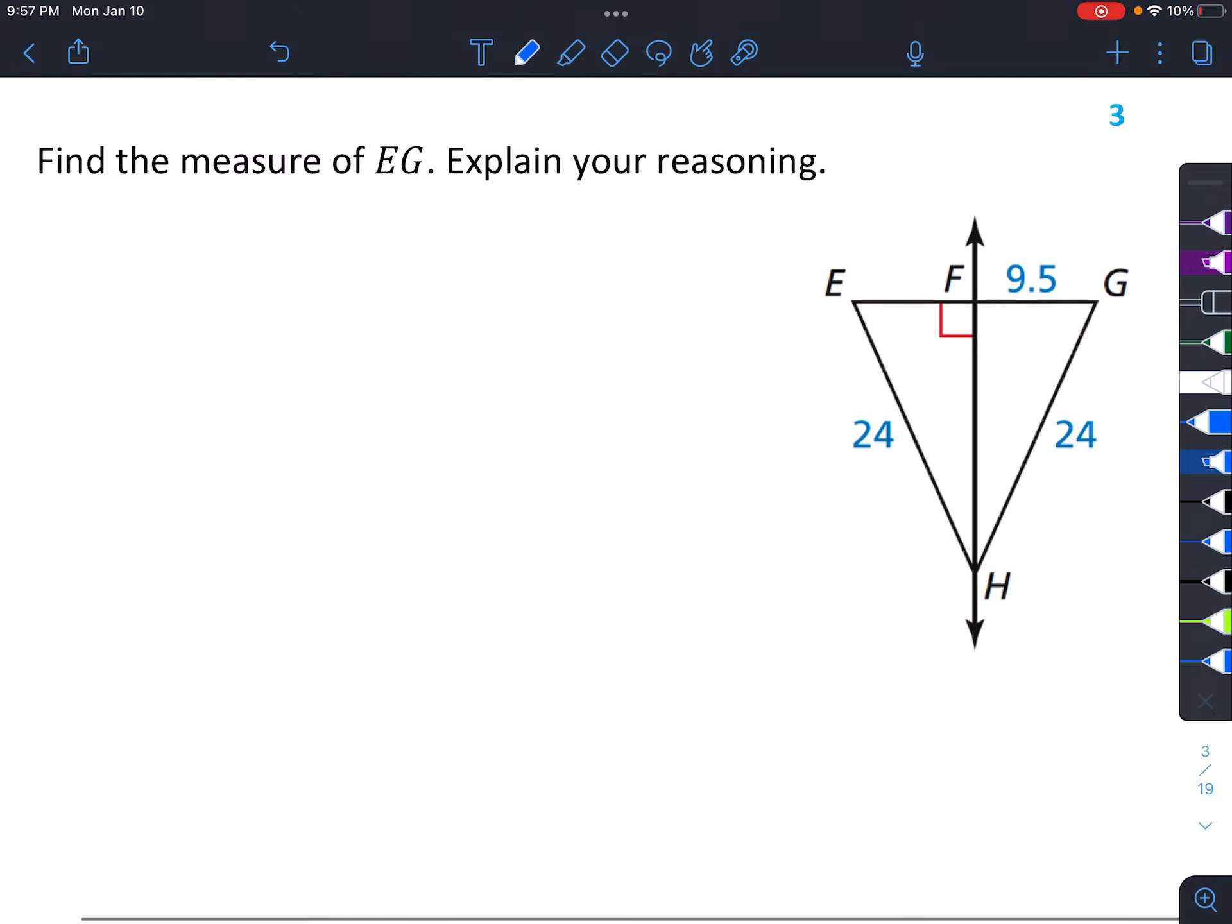Alright, let's look at the next one. Find the measure of EG. Okay, so this time we're given that these two sides are the same, because they're both 24. And we're also given that this is perpendicular. And we have the Converse Theorem that says that if we have a point, and it's equal distances from the endpoints of the segment, then it has to lie on the perpendicular bisector, which means that this has to be a perpendicular bisector, which means that this side has to be the same as this side.